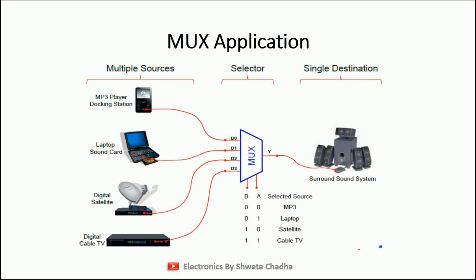As a common example, where the number of input signals is 4 and 1 output signal is there, these are the 2 select lines which will be used for a 4 cross 1 multiplexer. With the help of select lines, we can choose which input signal will be collected across the output. When the select lines are 0,0 the MP3 player will be collected across the output, that is our surround sound bar. When the input signals are 0,1 the laptop input will be treated as the output. For 1,0 digital satellite will be treated as output. And for 1,1 our digital cable TV will be treated as output. So this is the application of a multiplexer.